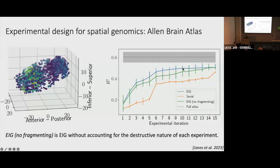Our method comes pretty close to the full atlas fairly quickly — around 10 iterations we've essentially reconstructed the atlas as well as these approaches can do. We also tried it with no fragmenting — allowing next slices to overlap the original slice — which actually gave slightly worse performance. I think this is because overlapping captures redundant information, so allowing fragmenting actually gives better performance. We also tried a serial approach where an expert told us what to slice next — that also did not do very well, though it did well on the fifth one.